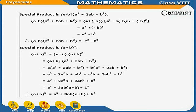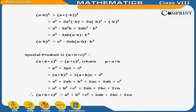(A−B)³ equals (A+(−B))³ = A³+3A²(−B)+3A(−B)²+(−B)³ = A³−3A²B+3AB²−B³ = A³−3AB(A−B)−B³. Therefore: (A−B)³ = A³−3AB(A−B)−B³.